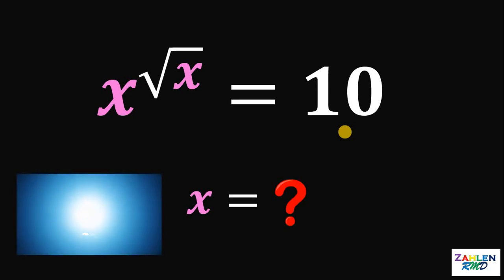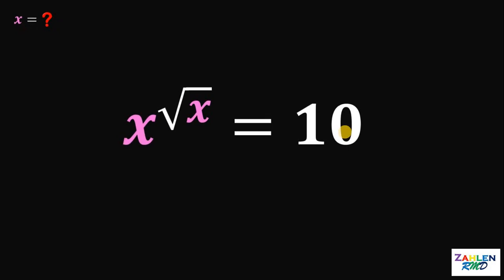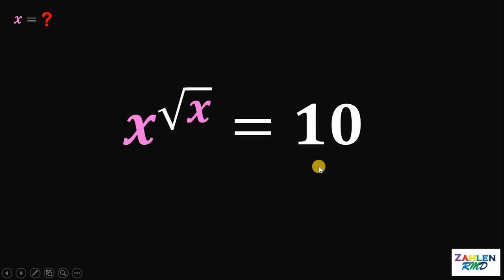Time's up. Now let's answer this question together. Our goal is to solve for the real value of x. Given the equation x raised to the square root of x equals 10, take note that x raised to the square root of x is an increasing function, wherein 10 is a constant. Therefore, if we graph those functions, we have one and only one intersection. Therefore, there is a unique solution to this equation.